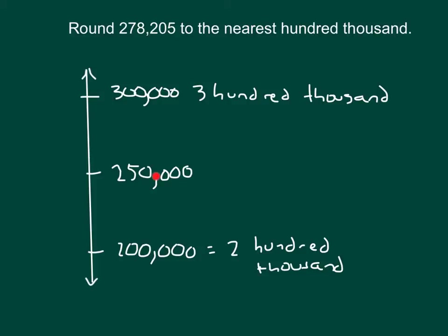This midpoint helps us place where this number is. So if it's at the midpoint or higher, it will round to 300,000. And in this case of this number here, 278,205, yes, it is closer to 300,000. So if we express our answer here, it's 278,205 rounded to the nearest 100,000 place is 300,000.